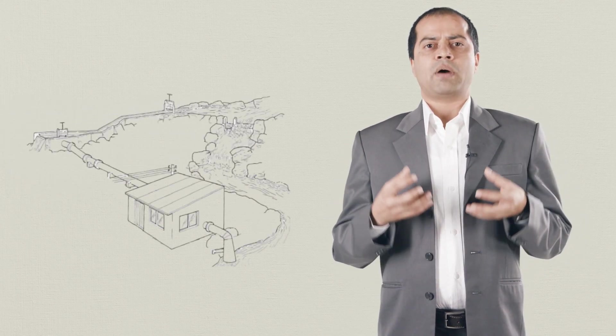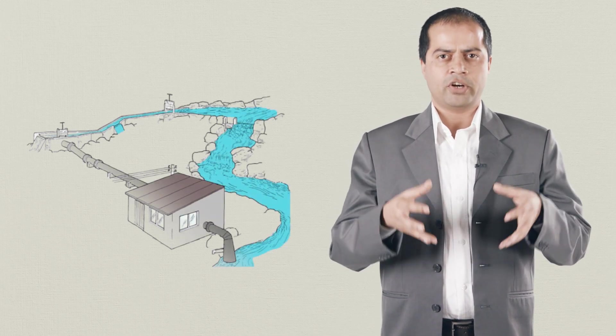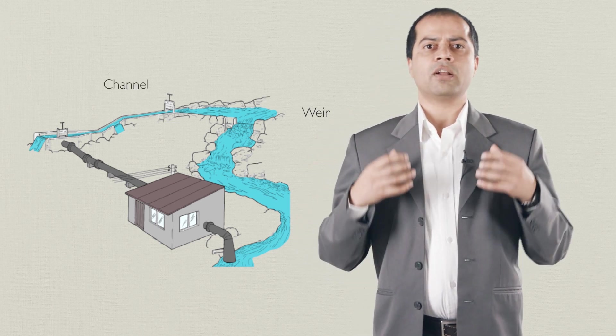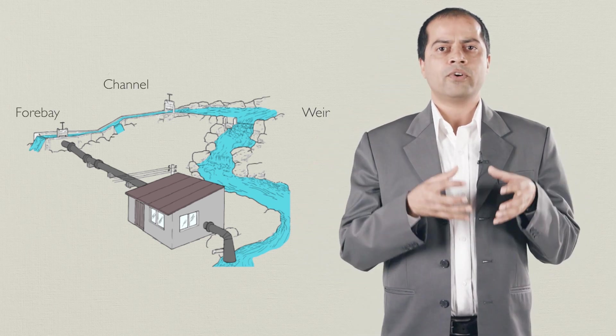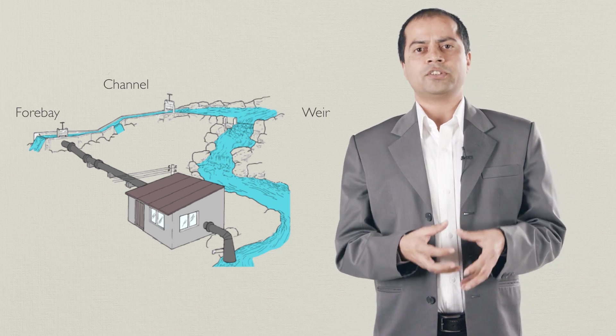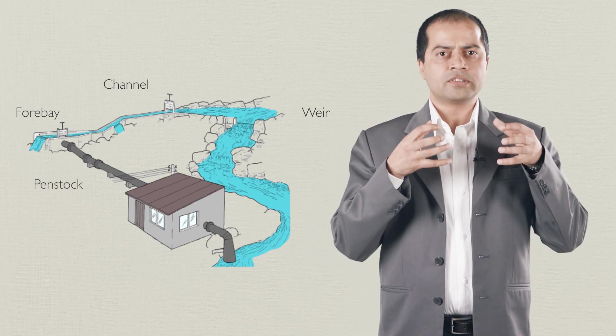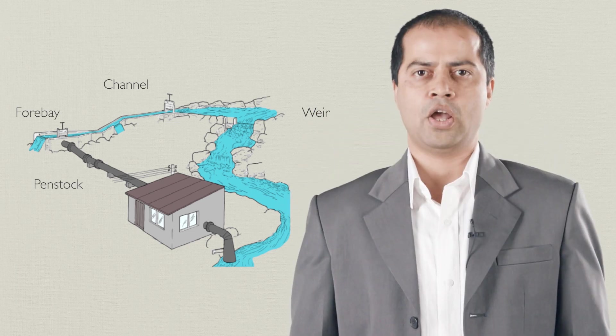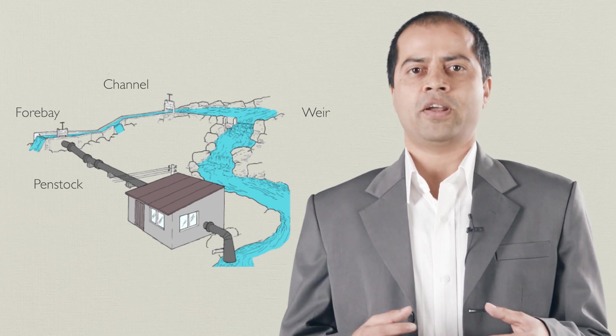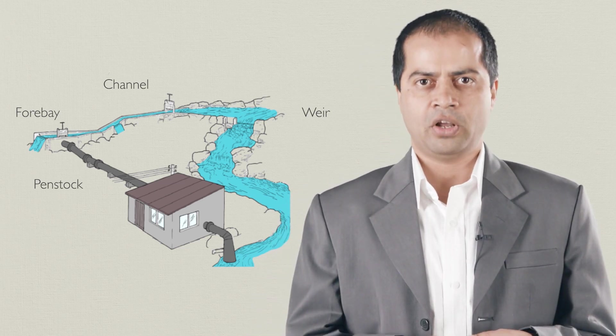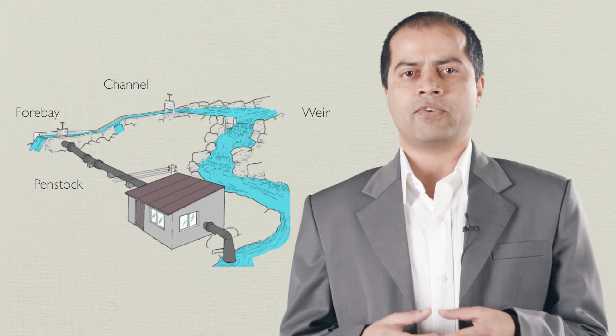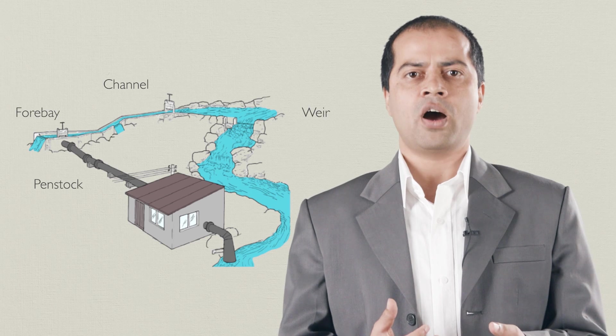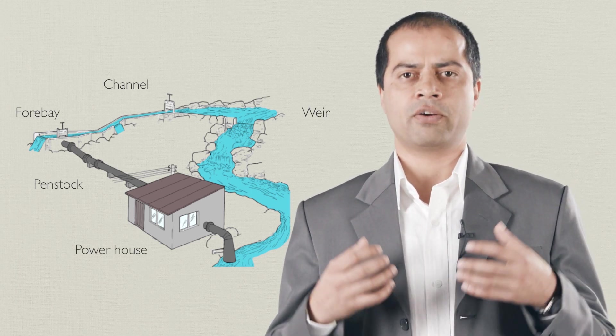A micro-hydro-power plant consists of different components. At the weir, the river flow is diverted into a channel. The channel leads the water to a forebay tank. At forebay tank, water enters into the penstock. It later hits the turbine blades and causes the turbine shaft to rotate. A generator connected to the rotating shaft produces electricity. Water leaving the turbine flows back to the river. All electromechanical components are housed in a building, which is the powerhouse of the hydropower plant.